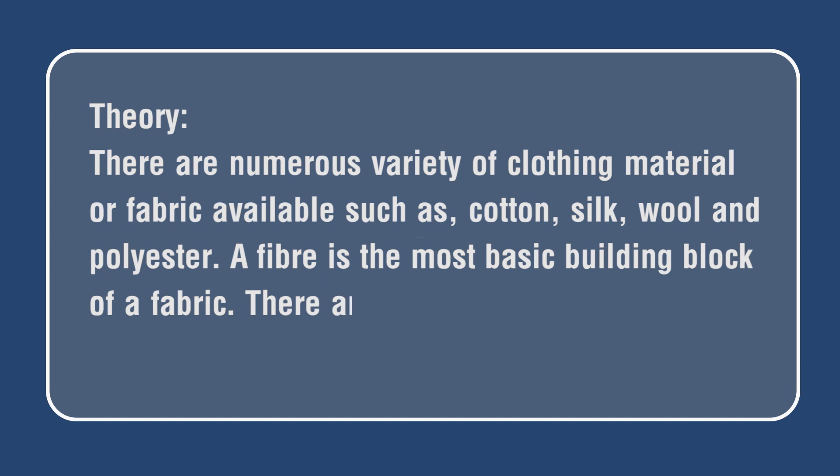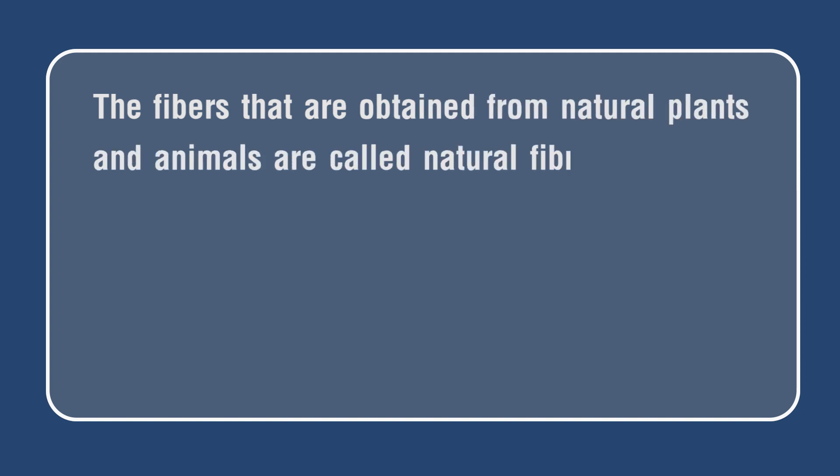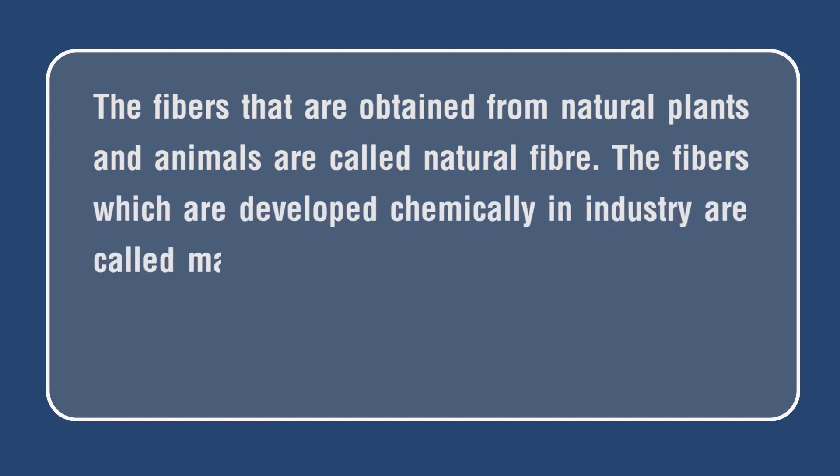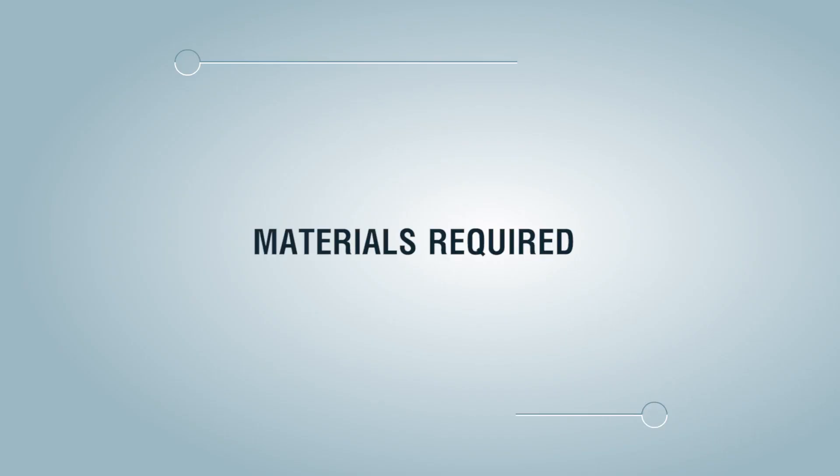There are mainly two types of fibers: natural fibers and synthetic or man-made fibers. The fibers that are obtained from natural plants and animals are called natural fiber. The fibers which are developed chemically in industry are called man-made or artificial fiber. We use the burning test to identify and differentiate between natural and synthetic fibers.